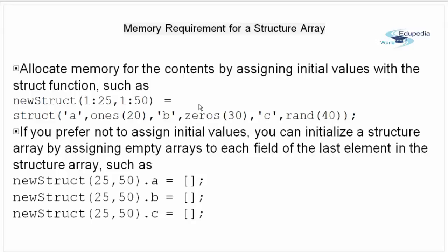In case you prefer not to assign initial values, you can initialize the structure array by assigning empty arrays to each field of the last element in the structure array as shown in the last line of the code. So we have a new structure with size 25,50 dot a and we are assigning it with empty array. Similarly, we are doing with field B and field C.